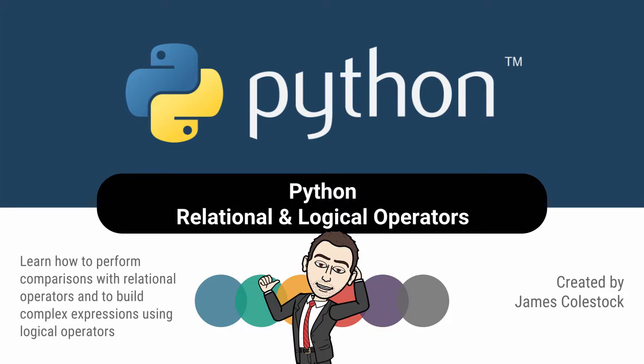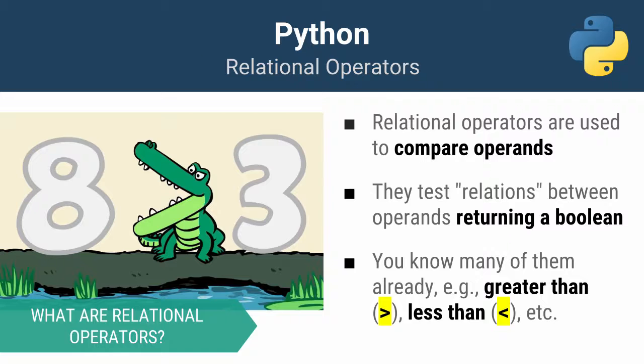In this video, we're going to learn how to perform comparisons using relational operators. We're also going to explore logical operators and how they can be used to control the flow of our programs. A relational operator is something that compares operands and returns a true or a false based upon the relationship.